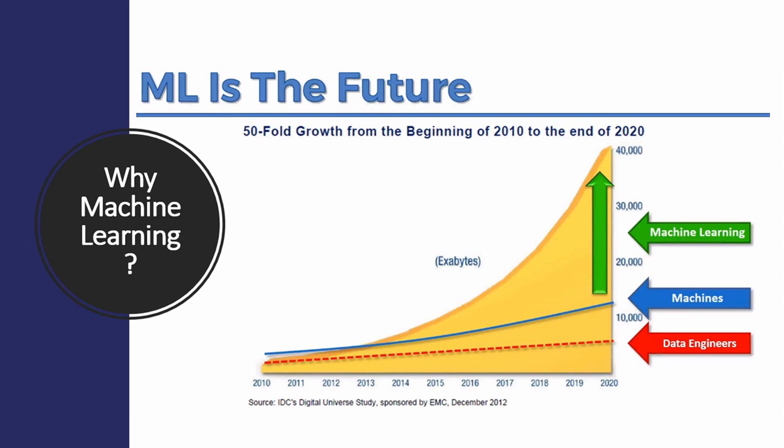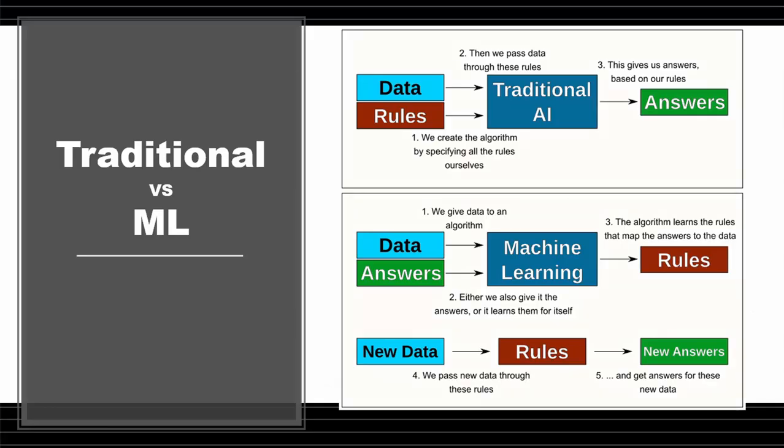Machines can handle large volumes of data with high-level computing power. So when dealing with more data, it becomes very difficult for humans, which is why we are moving to the machine learning concept — to handle huge sizes of data with less computing power.